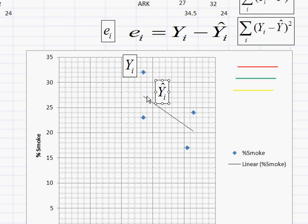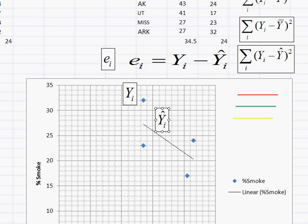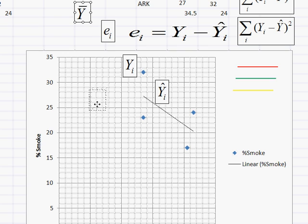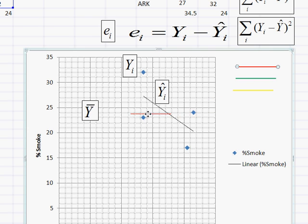Now, what about the y-bar? Well, the y-bar is just the average, which is 24. So I'm going to put y-bar down here. And I'm also going to bring in a red line. And I'm going to put it right at 24. And we can see where the average y-bar is.